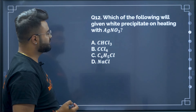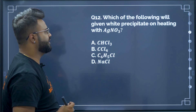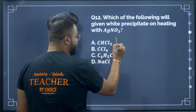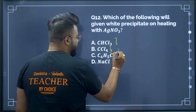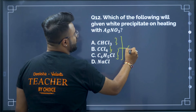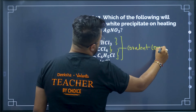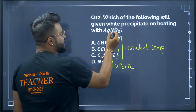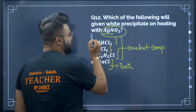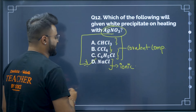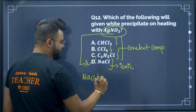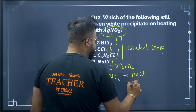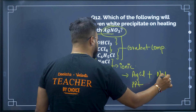Question 12: Which will give a white precipitate on heating with silver nitrate? Methyl trichloride, carbon tetrachloride, and benzyl chloride are all covalent compounds. Only NaCl is an ionic compound. Silver nitrate gives a white precipitate only with ionic compounds. Therefore option D is correct — NaCl + AgNO₃ → AgCl (white precipitate) + NaNO₃.